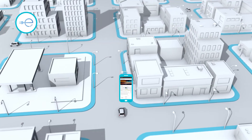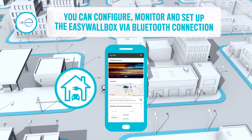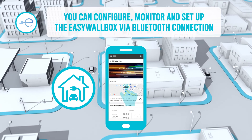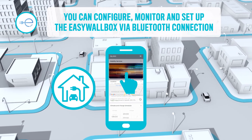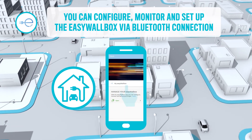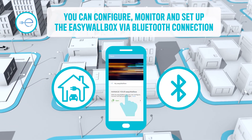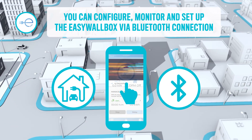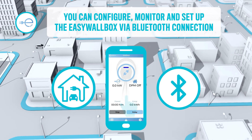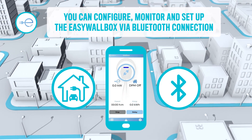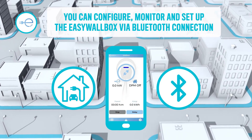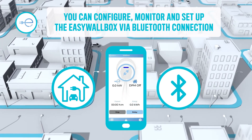With My Easy Wallbox, you can configure, monitor and set up the Easy Wallbox via Bluetooth, including functions such as start and stop or postpone the charge.